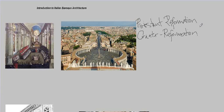The Counter-Reformation really began in the mid-16th century with the Council of Trent. You can see an artist's rendering of the Council of Trent on the left — that was just a meeting of church leaders where they got together and asked what to do about the threat of the Protestant Reformation. On the right is a view of the Vatican, which is the heart of the Catholic Church in Italy.